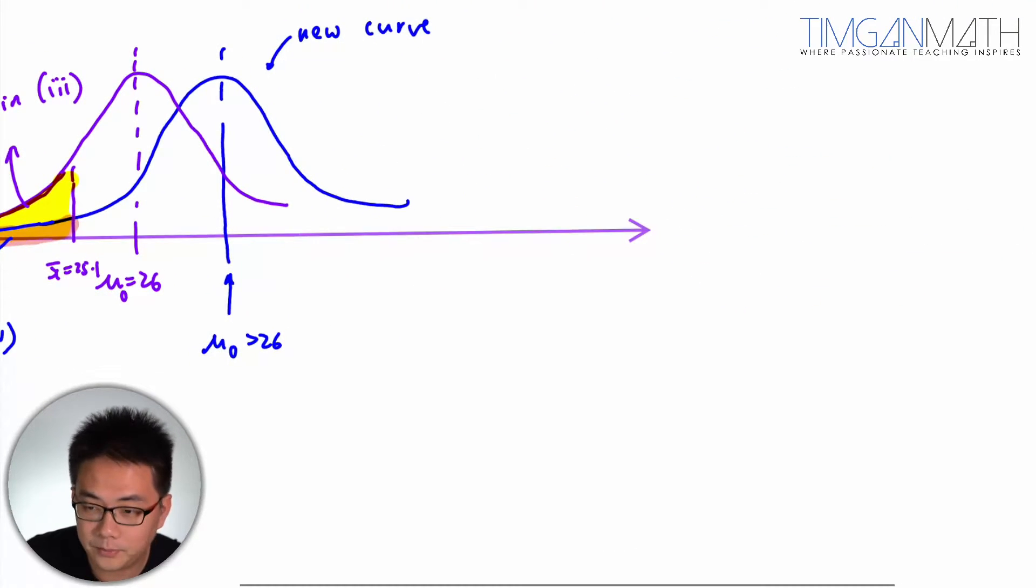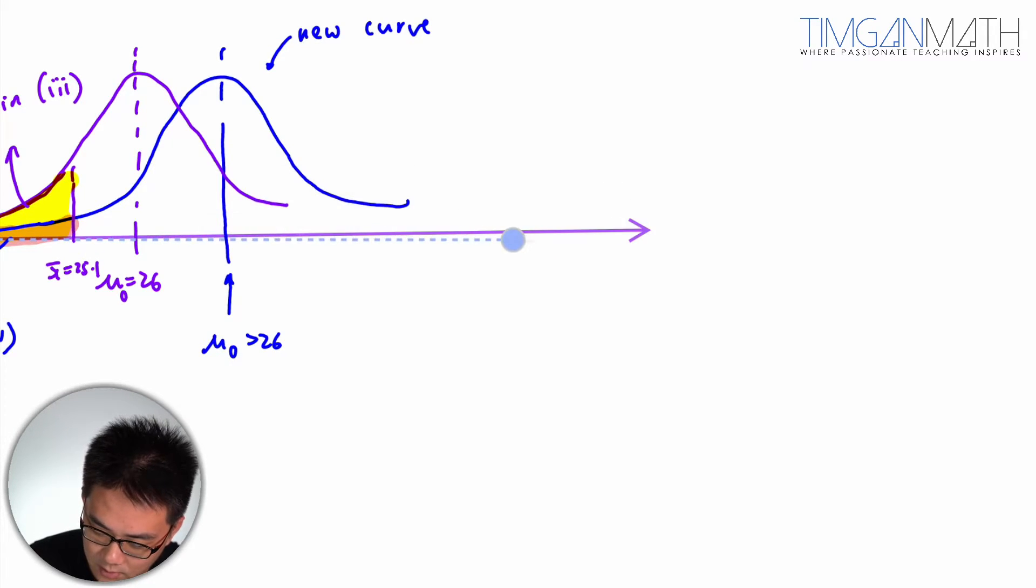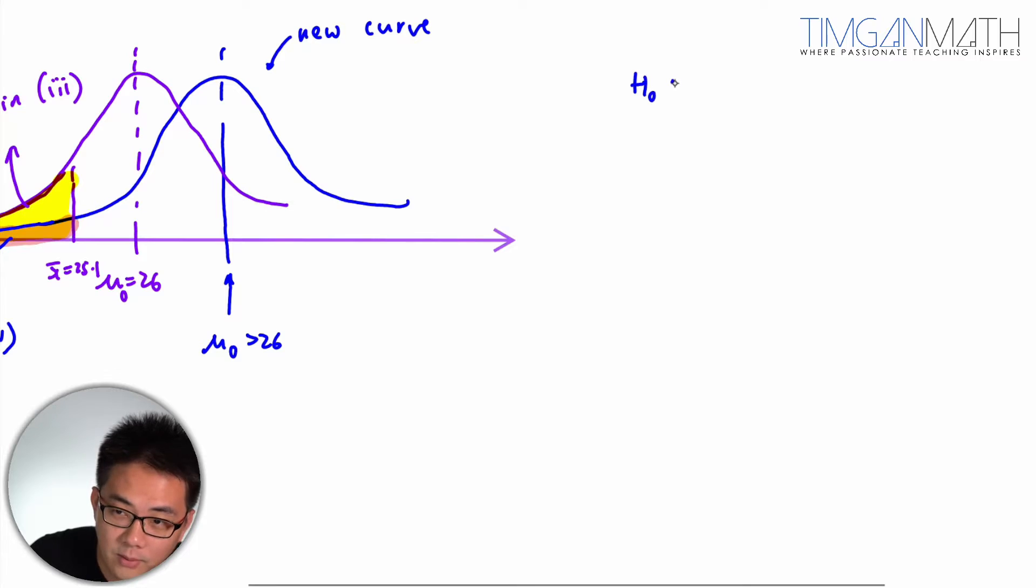So, in other words, the level of significance actually will be smaller. So how do we write this now? I think by the diagram we can see, mu naught, H1 is less than mu naught. This is where mu naught is bigger than 26.